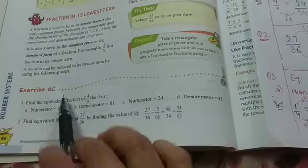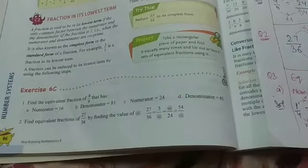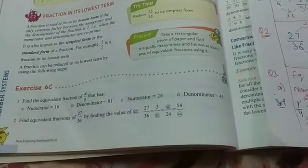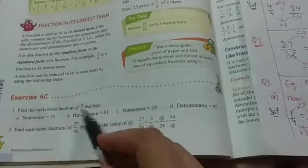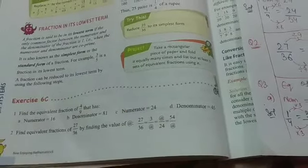Today we are going to start our Exercise 6C and question number 1 is find the equivalent fraction of 4 by 9 that has numerator 16. That means what we have to do is we have to write the equivalent fraction but there is one condition that the numerator should be 16.